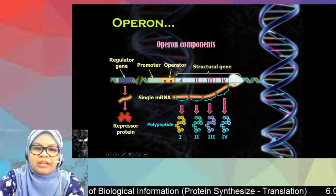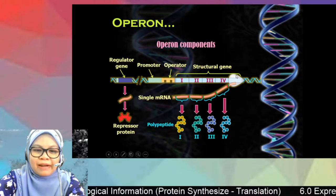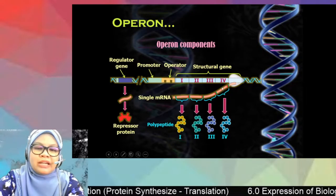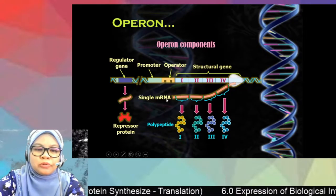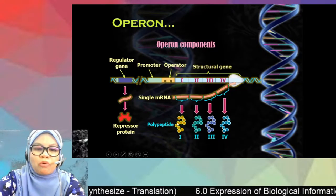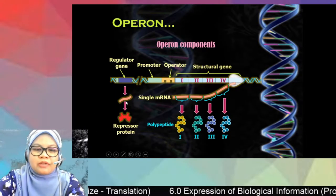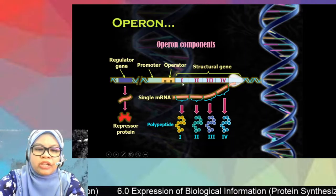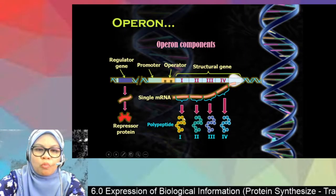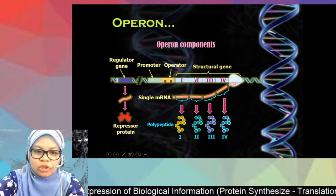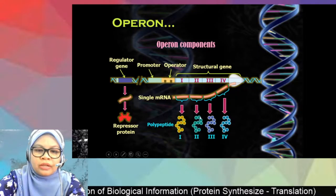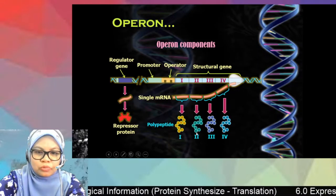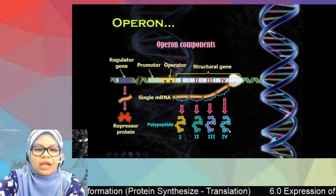When the structural gene is transcribed, it produces a single mRNA. The mRNA is later used to produce polypeptides. Structural gene number one codes for polypeptide one, structural gene number two codes for polypeptide two, and the same goes for numbers three and four.